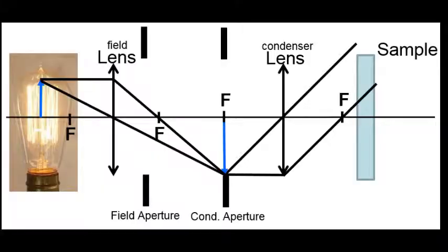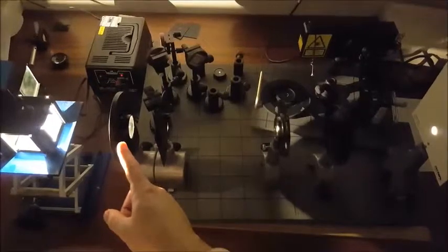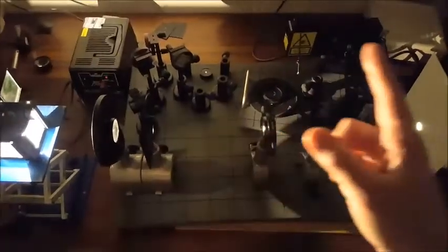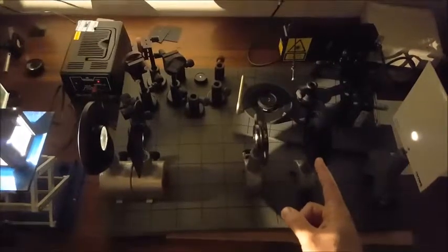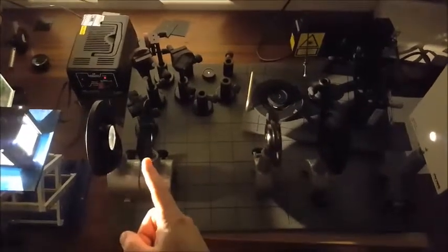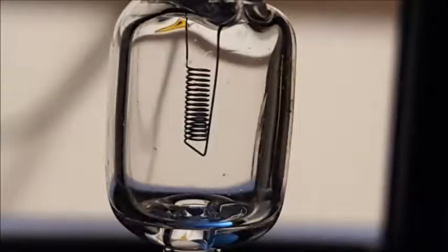What I've set up here now is not the critical illumination, but the Köhler illumination. In this case, we now have a component which is the field lens, a component that is the condenser lens with a condenser aperture and a field aperture. The light source is still the same as before — a filament light source.